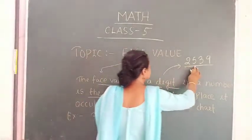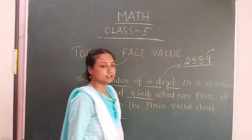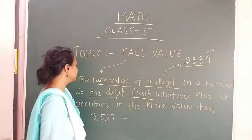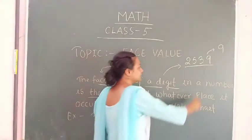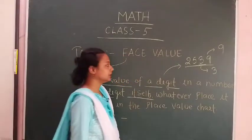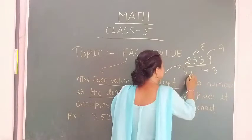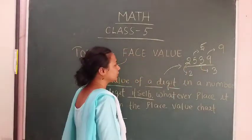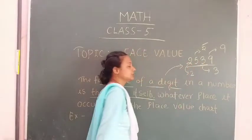So this number is 2, 5, 3, 9. The face value of 9 is 9. The face value of 3 is 3. The face value of 5 is 5. And the face value of 2 is 2. So this is the face value of different digits in the number 2539: face value of 9 is 9, face value of 3 is 3, face value of 5 is 5, and face value of 2 is 2.